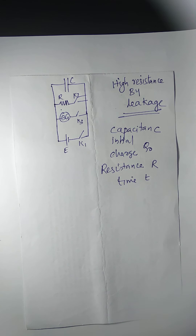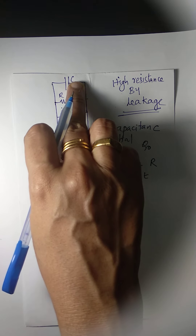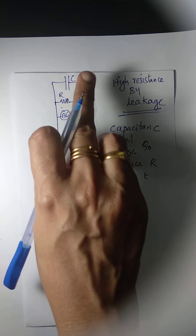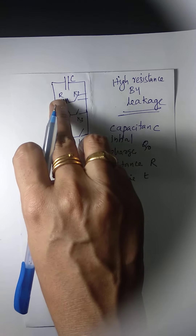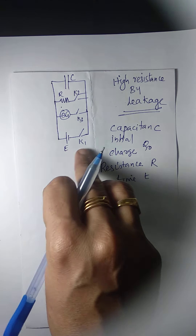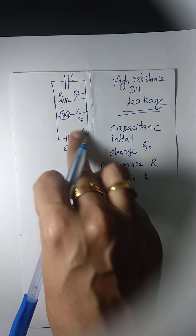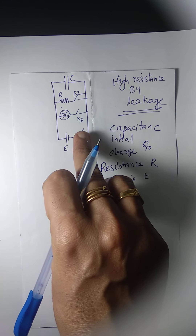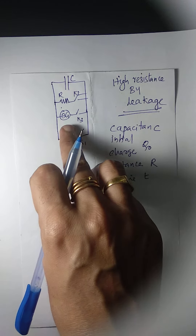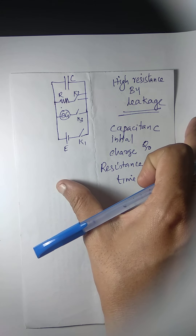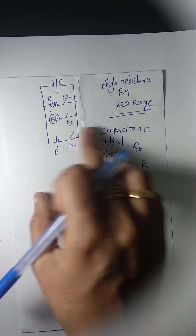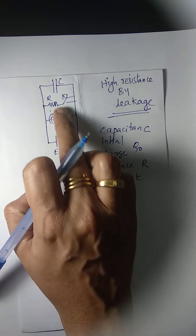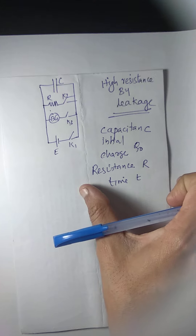In the circuit that is shown, we are having a capacitor, a resistor, a cell of EMF E, and three keys: K1, K2, and K3.